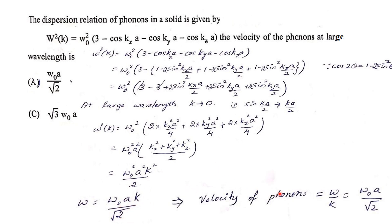The velocity of phonons is v = ω/k. Taking the square root, ω = ω₀·a·k/√2, so v = ω₀·a/√2. Therefore the answer is ω₀a/√2.